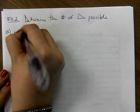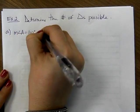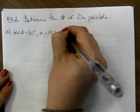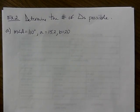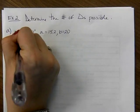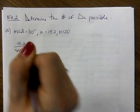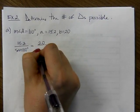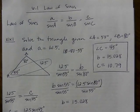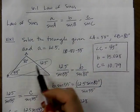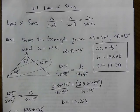Let's say angle A is 110 degrees, side a is 15.2, and side b is 20. To determine if there are 0, 1, or 2 triangles, you still start with Law of Sines. Set up: 15.2 over sine 110° equals 20 over sine B. We're looking for the angle. I've been given two sides and an angle — potentially the ambiguous case.